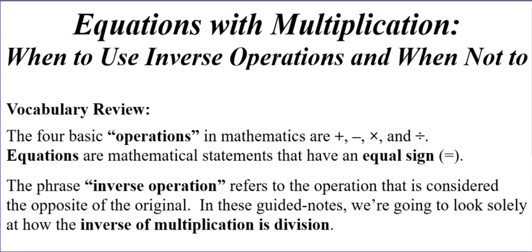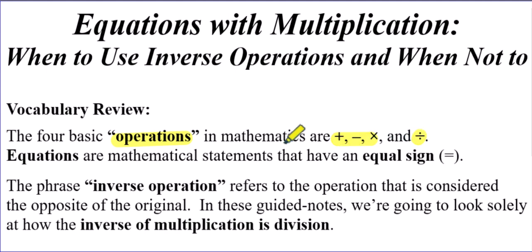We're going to start with some vocabulary review. The word operations — make sure you know what this word means. There are four basic operations in mathematics, and those are adding, subtracting, multiplying, and dividing. Nothing drastic here, just make sure you know that those are called the operations. Now, equations are mathematical statements that actually have an equal sign, a little bit different from expressions that don't have equal signs, but equations do have equal signs.